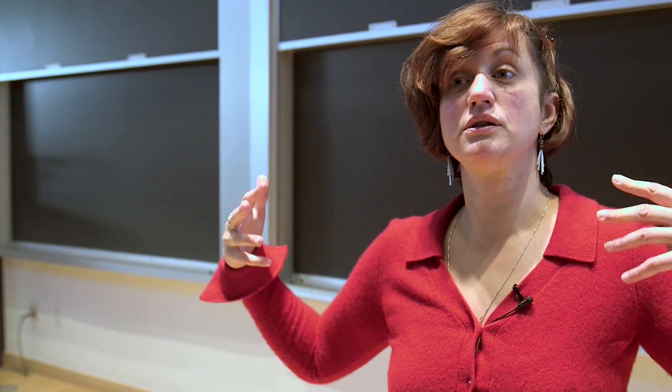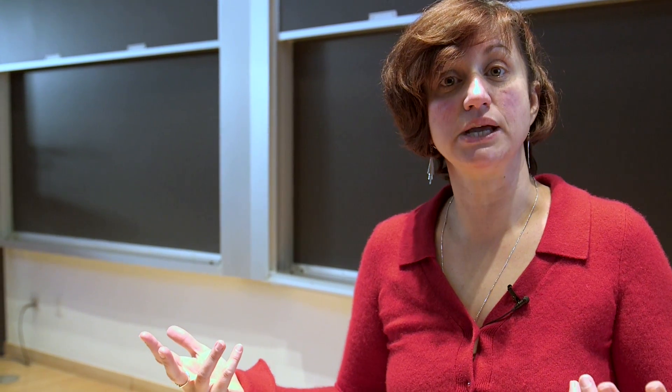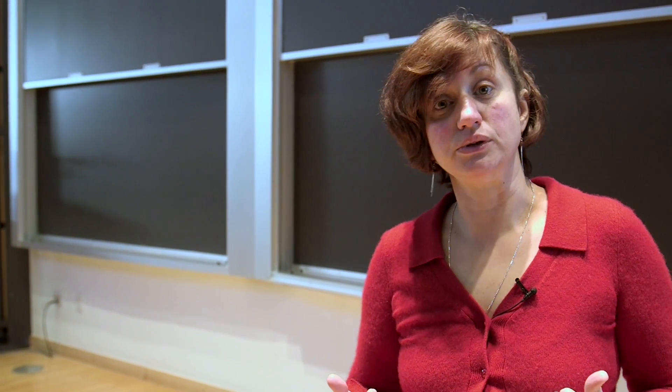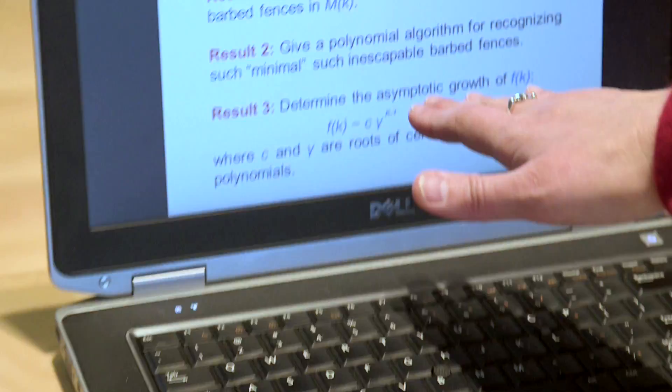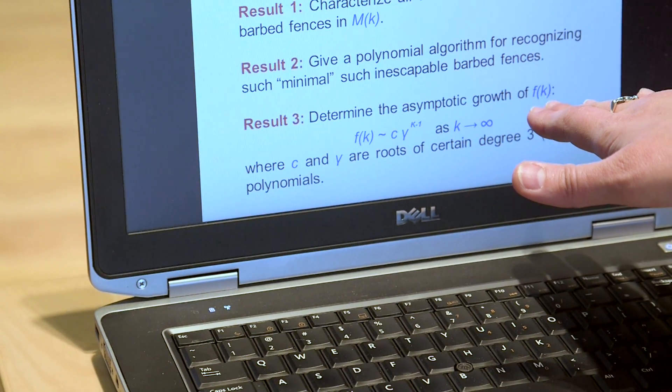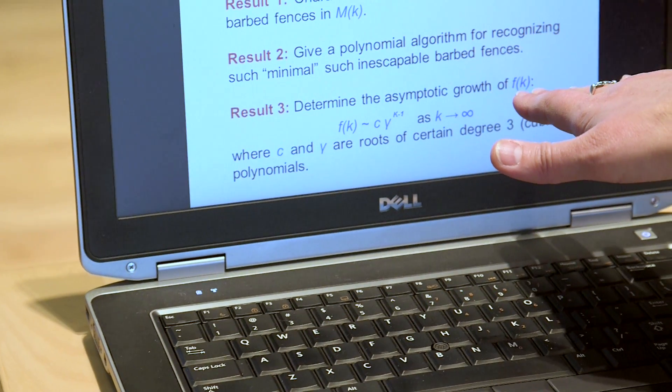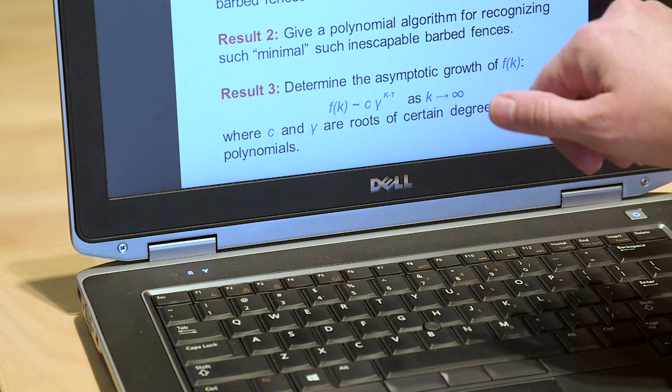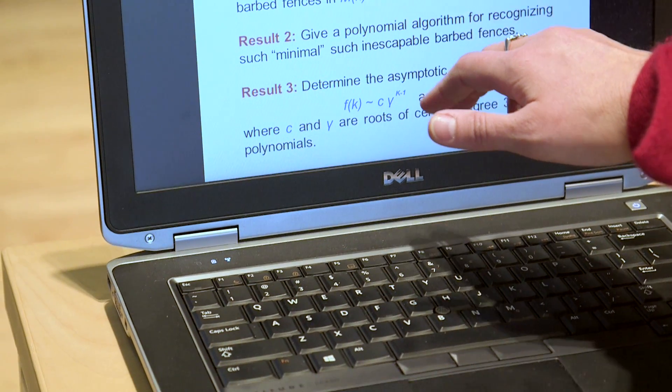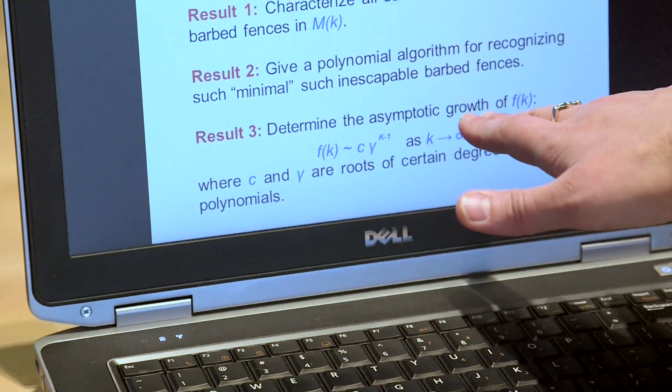So how much the computer thinks about answering one way or another is given by this polynomial. And finally, instead of trying to calculate exactly the number of prisons with K cells that are inescapable, they determine its asymptotic growth.